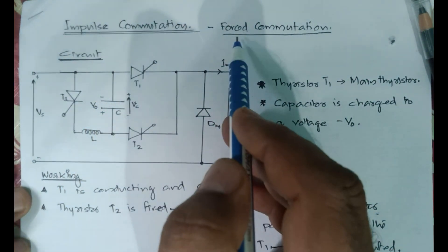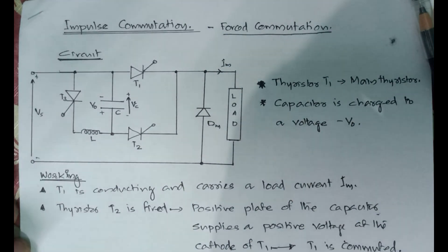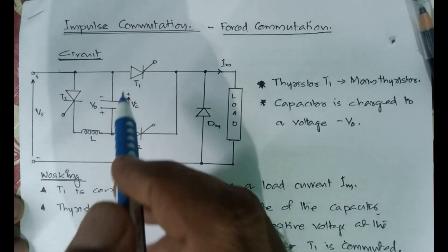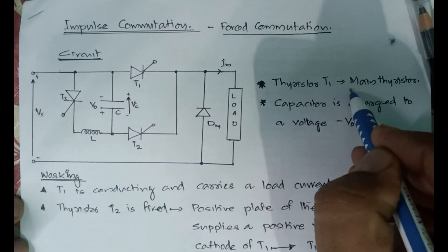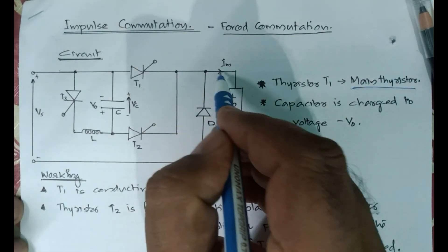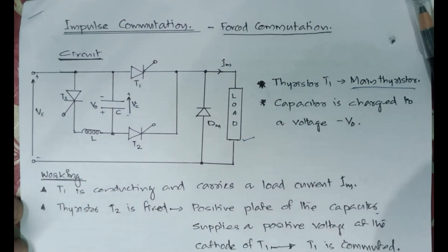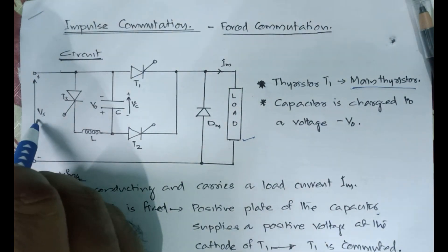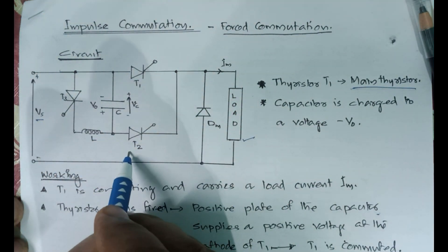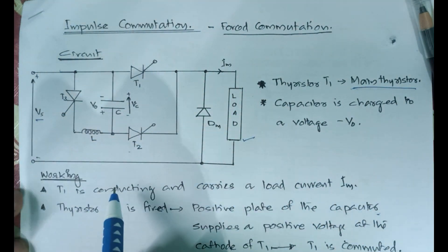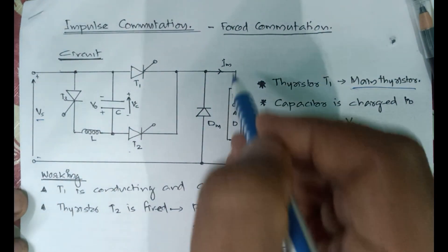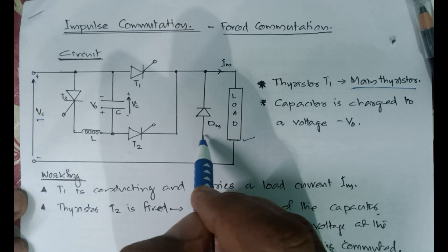Impulse commutation is a method of forced commutation. In this circuit, thyristor T1 is called the main thyristor because it supplies the necessary load current to the load resistor. The supply voltage or DC input voltage is Vs. In addition to T1, we have two more thyristors T2 and T3, along with a capacitor C and an inductor L. Parallel to the load there is a freewheeling diode Dm.